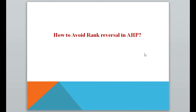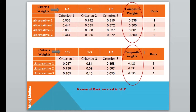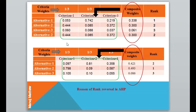The big question is: how to avoid rank reversal in AHP? For that you need to understand the reason behind it. In the previous example, you can see that the composite weights changed with the addition of an alternative. These composite weights depend on the local weights of each alternative under every criterion. In order to avoid rank reversal, these original local weights must remain unchanged when an alternative is added or removed.